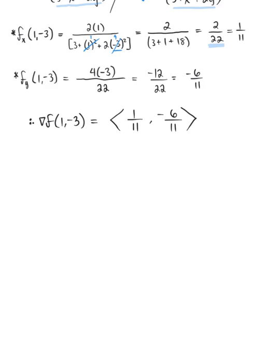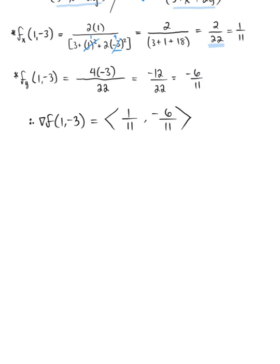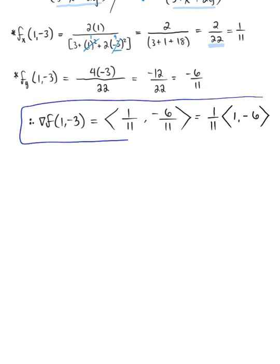Notice we have a scalar multiple, so we can factor 1/11 out to the front. This is optional — you don't have to do this — but it can make the computation a little bit easier later on. So there we have it: the gradient of this function at the point (1, -3) is (1/11) times the vector (1, -6). The first part is all set.